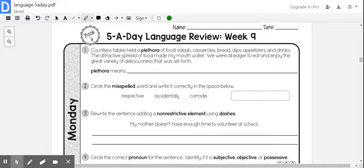Number one: Countless tables held a plethora of food—salads, casseroles, bread, dips, appetizers, and drinks. The attractive spread of food made my mouth water. We were all eager to eat and enjoy the great variety of deliciousness that was set forth. Plethora means...